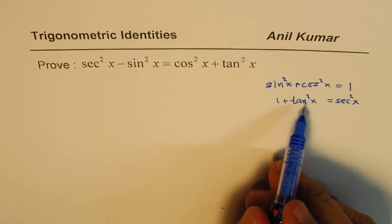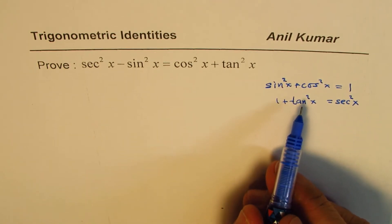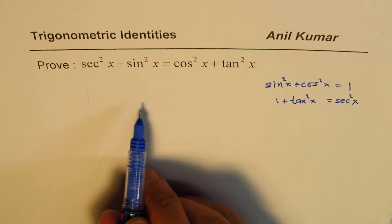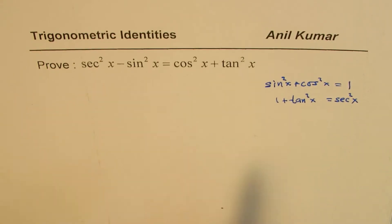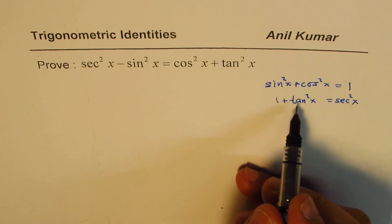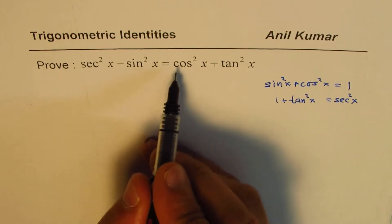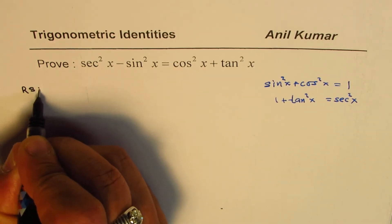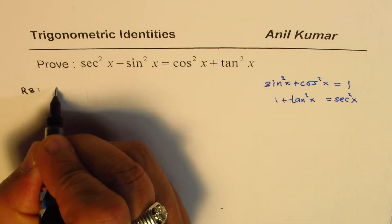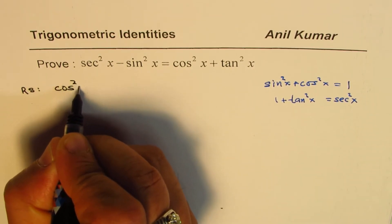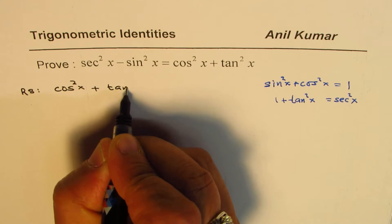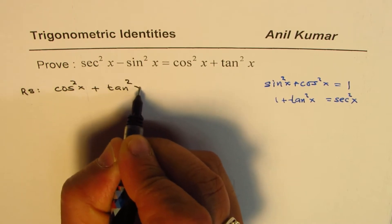So these two identities could help us simplify the right side to get the left side. In this particular case, I'll use these two identities. We'll start with the right side, which is given to us as cos square x plus tan square x.